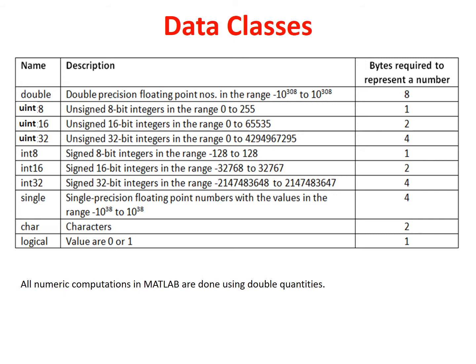uint16, that is unsigned 16-bit integer in the range 0 to 65535, requires 2 bytes. uint32, that is unsigned 32-bit integer, requires 4 bytes. int8, that is signed 8-bit integer in the range minus 128 to 127, requires 1 byte. int16, that is signed 16-bit integer in the range minus 32768 to 32767, requires 2 bytes. int32, that is signed 32-bit integer, requires 4 bytes.